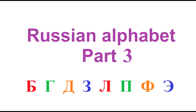Today we go on to learn the Russian alphabet. Letters G, D, L, P, F were fashioned after the Greek letters Gamma, Delta, Lambda, Rho, Phi.